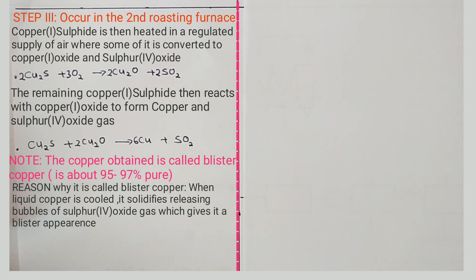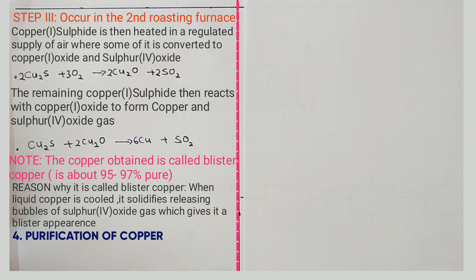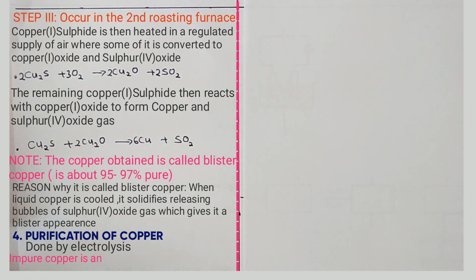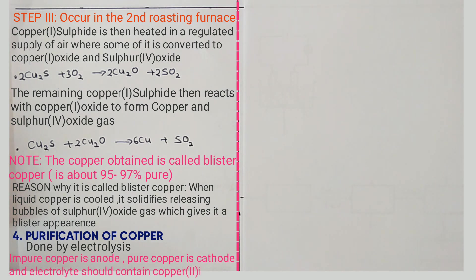To obtain copper used for making electrical cables, it is purified by electrolysis. The last stage is purification of copper by electrolysis, where the impure copper is made the anode and the pure copper is made the cathode. The electrolyte should contain copper ions, e.g. copper sulfate, copper chloride, or copper nitrate.